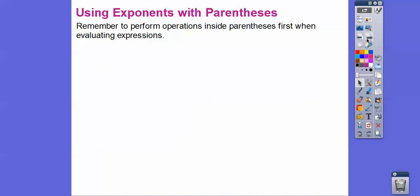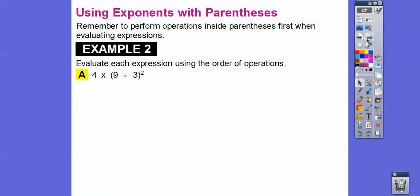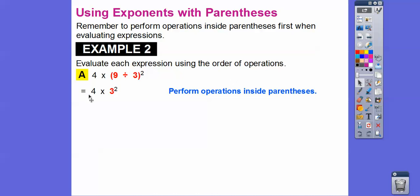Remember we do parentheses first if there are any. These next few have parentheses. So let's evaluate: nine divided by three is three — parentheses first. Now we do the exponent: three squared is nine. Some students want to give me six because they think it's three times two, but no — it's three times three. Now we multiply: four times nine is 36.